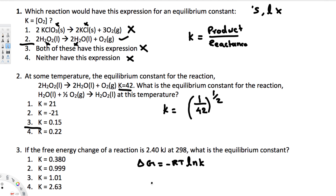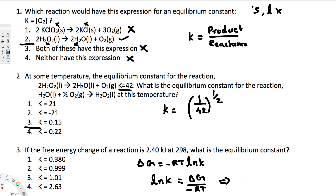Rearranging the equation, ln K = ΔG / (−RT). To solve for K, we take e to both sides: since e and ln cancel, we get K = e^(ΔG / −RT).